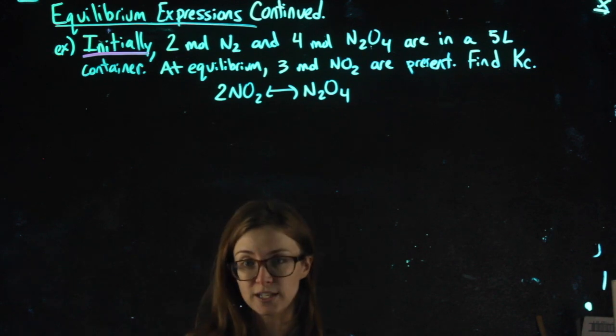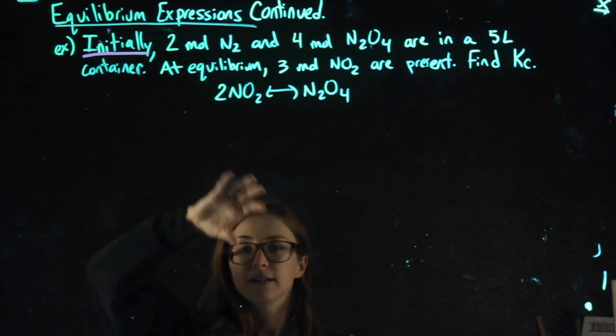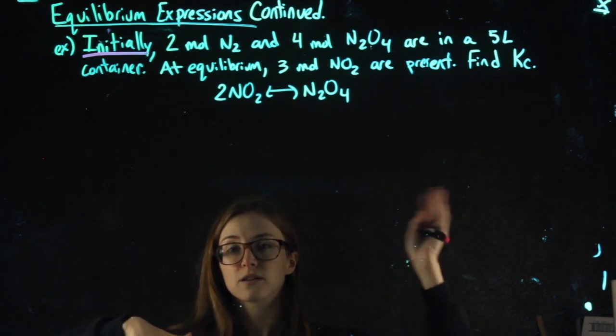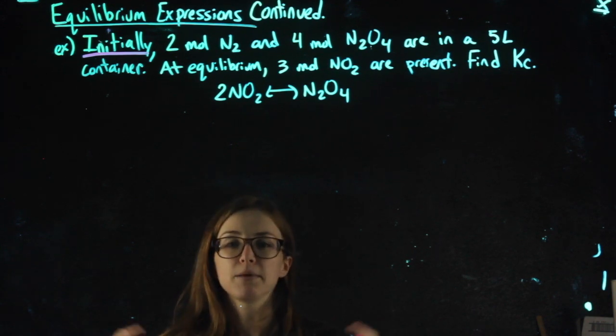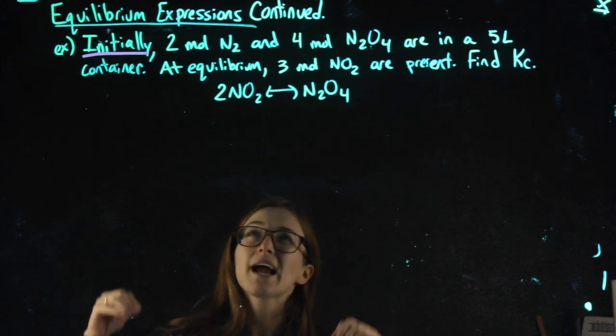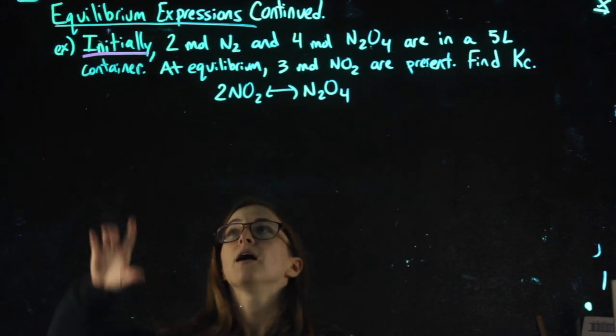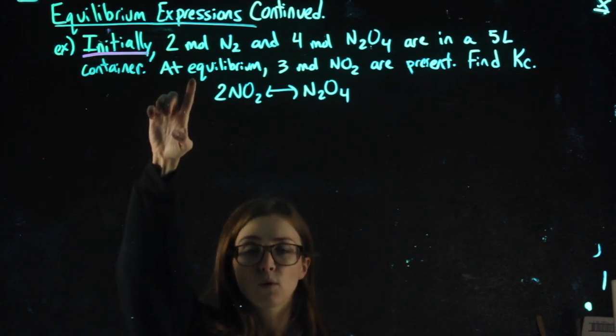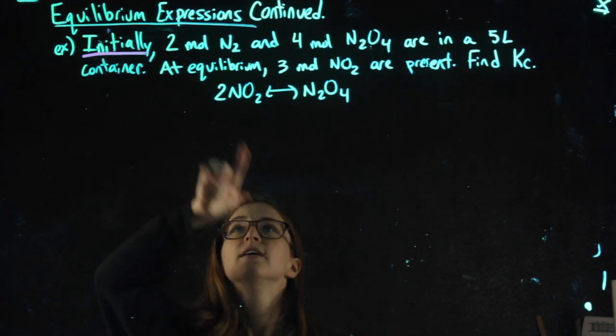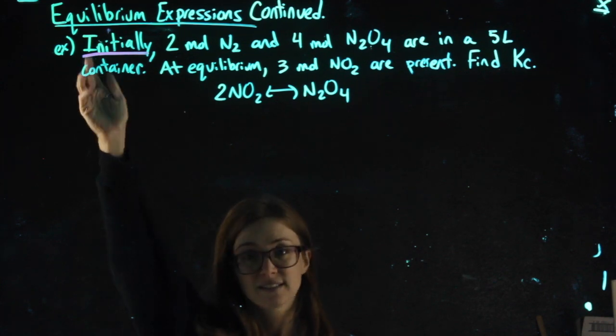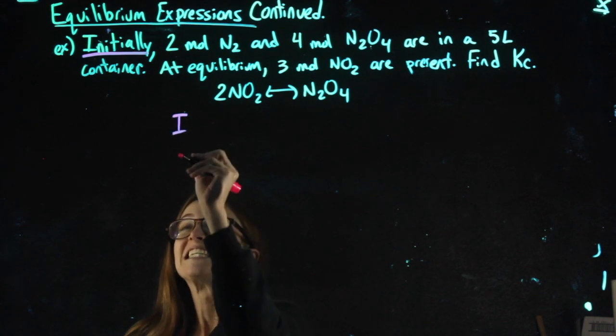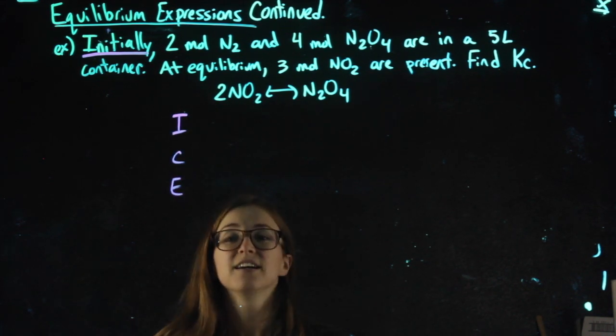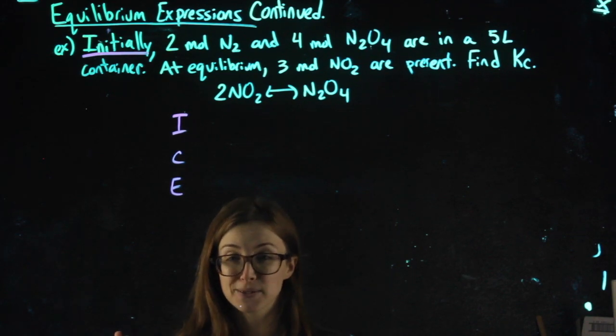But when I say the word initially, that means I have some amount. It's not quite balanced between the reactants and the products, and by balanced, I don't mean equal amounts. I mean that the rate of the reaction is equal in both directions. But I don't quite have yet that perfect ratio that I want. So I have some initial amounts, and I know that at some point, after it does a bunch of changing, we'll have equilibrium amounts. Initially, then change, then equilibrium. Or ICE, ICE charts. So here's where if you need to pause and groan, go for it, but I promise they're not bad.